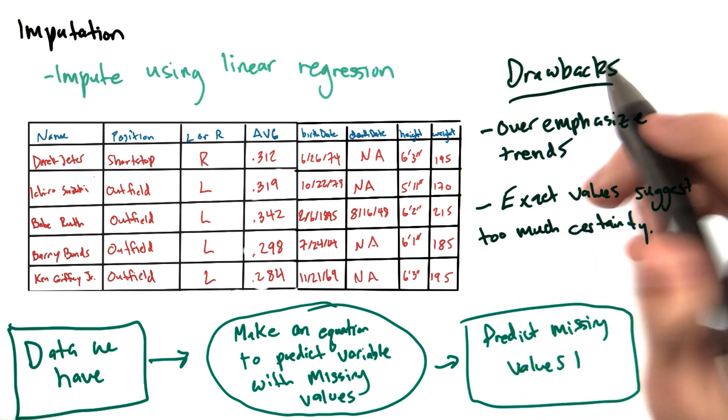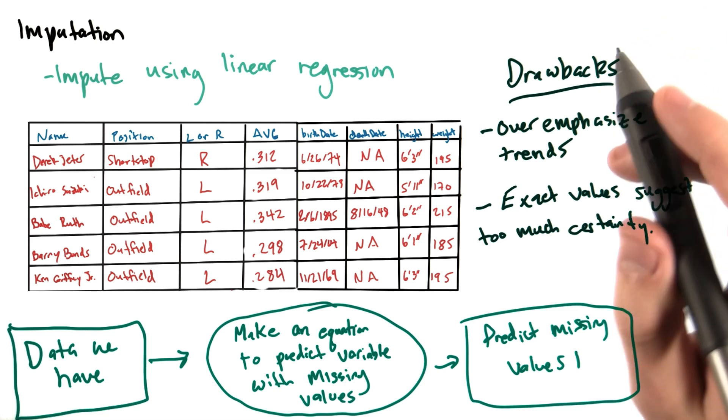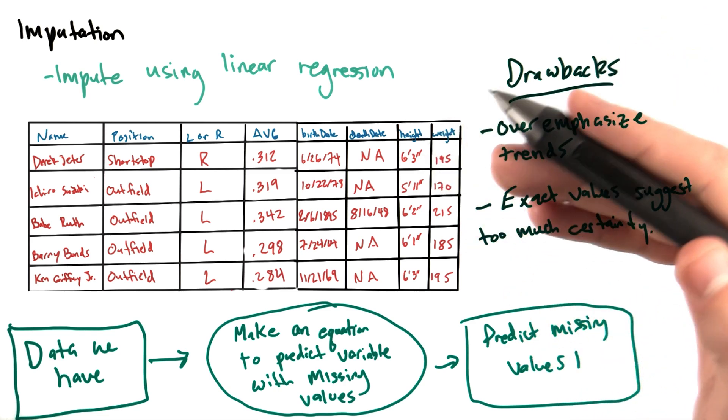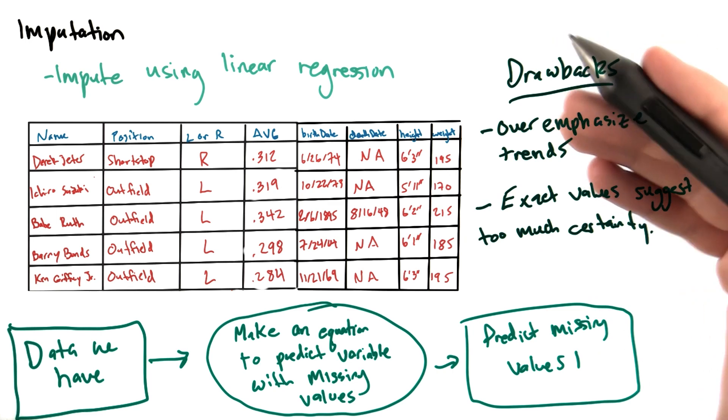Additionally, this model will produce exact values for the missing entries, which would suggest greater certainty in the missing values than we actually have.